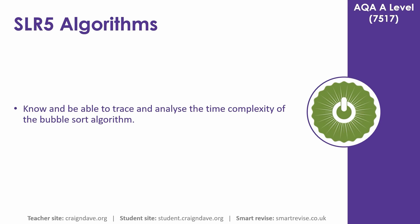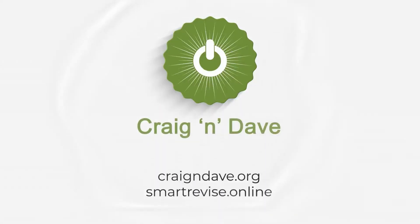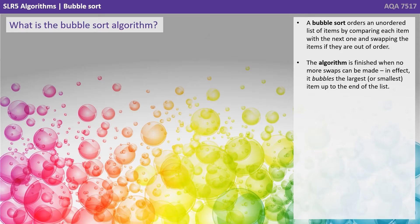In this video we go over how to trace and analyse the time complexity of the bubble sort algorithm. A bubble sort orders an unordered list of items by comparing each item with the next one and swapping the items if they are out of order. The algorithm is finished when no more swaps can be made. In effect, it bubbles the largest or smallest item up to the end of the list.